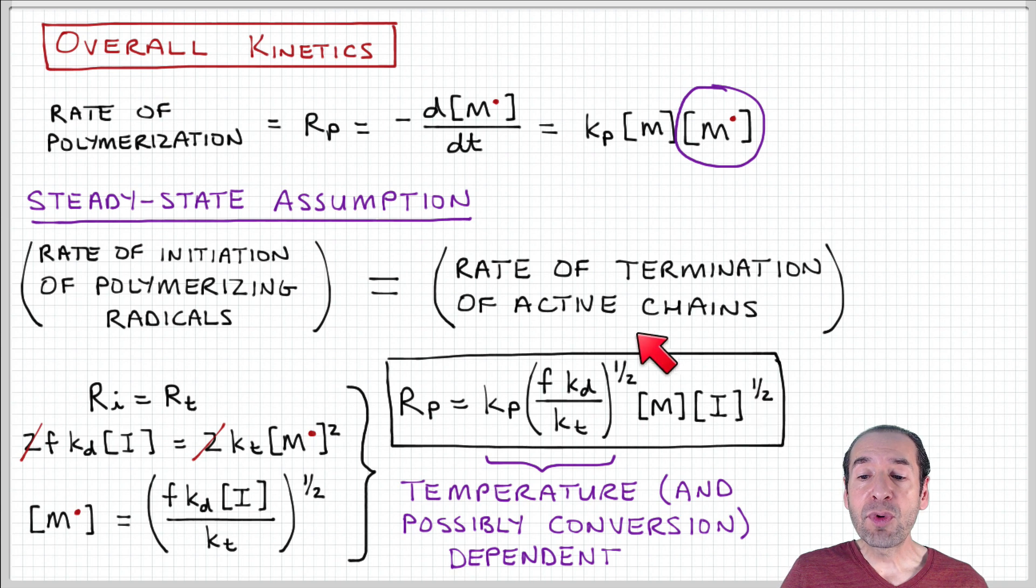This is an important relationship because it tells us how we can adjust the components in our reaction mix. This is what we're adding—monomer and initiator—and how the rate constants of these associated steps all play a role in determining the rate of polymerization.